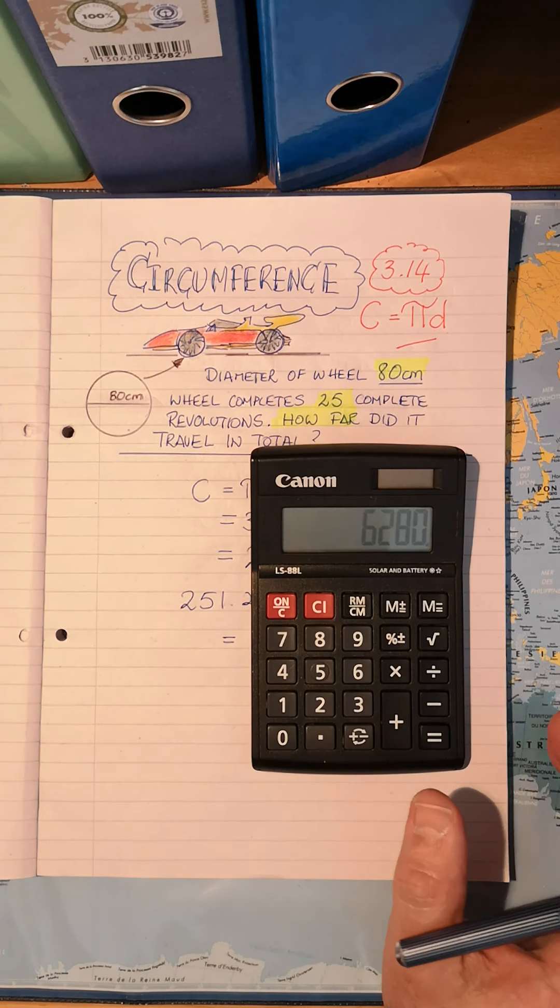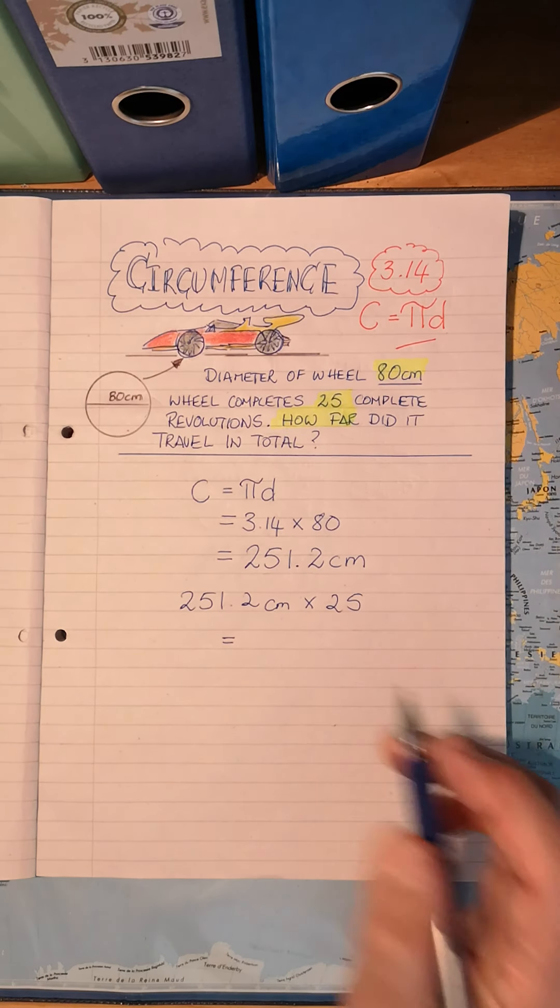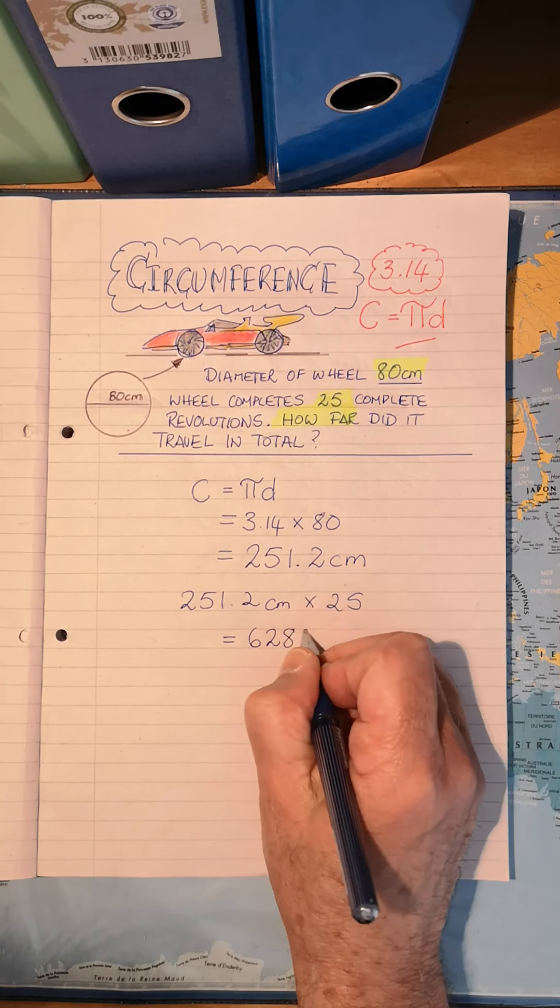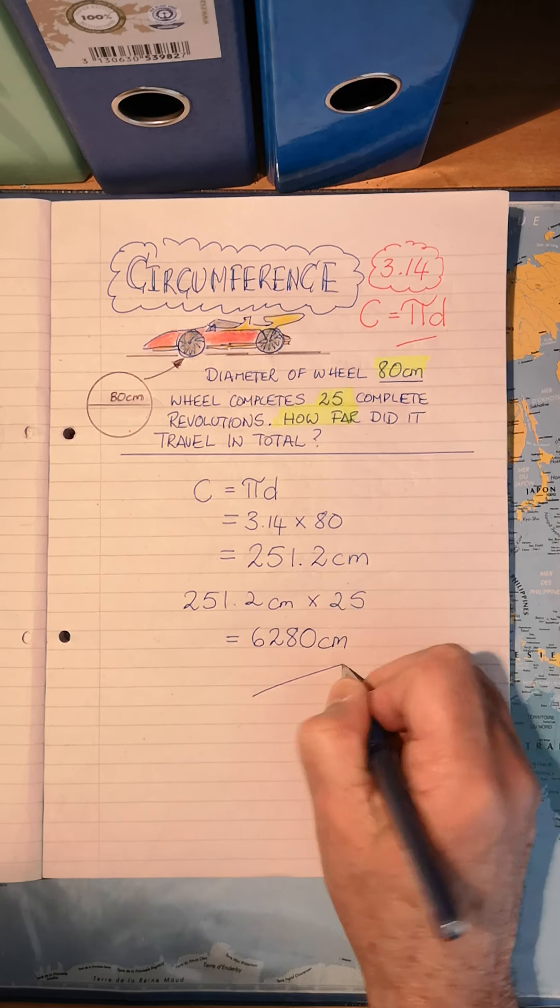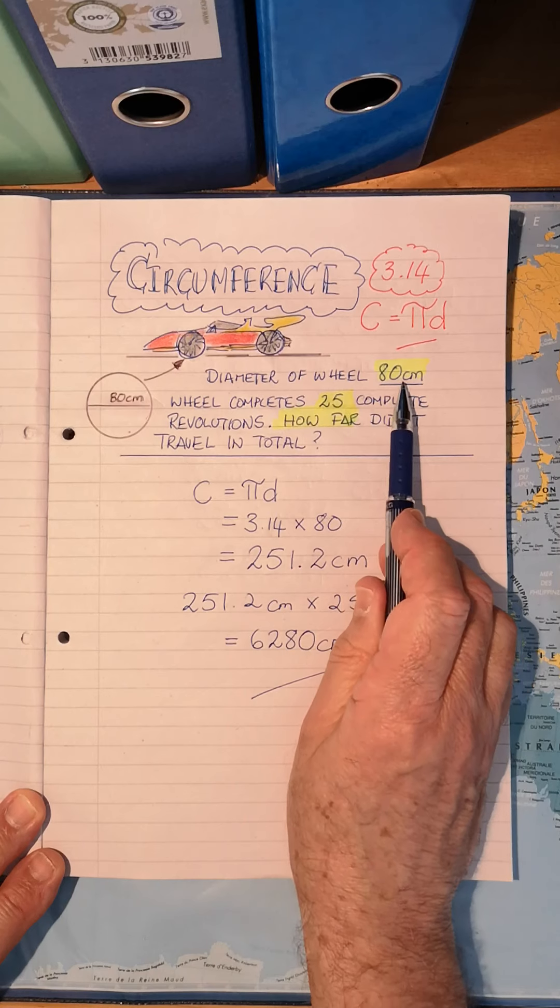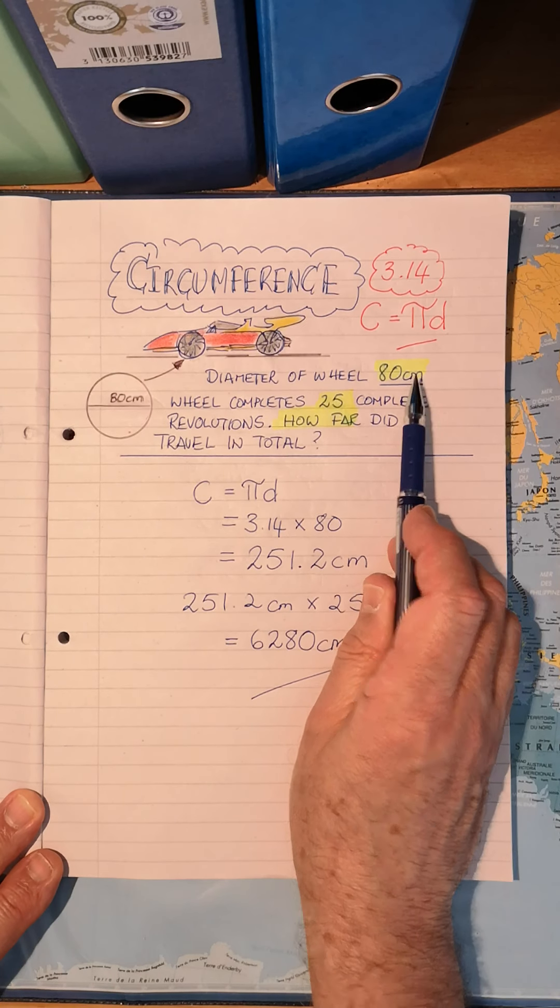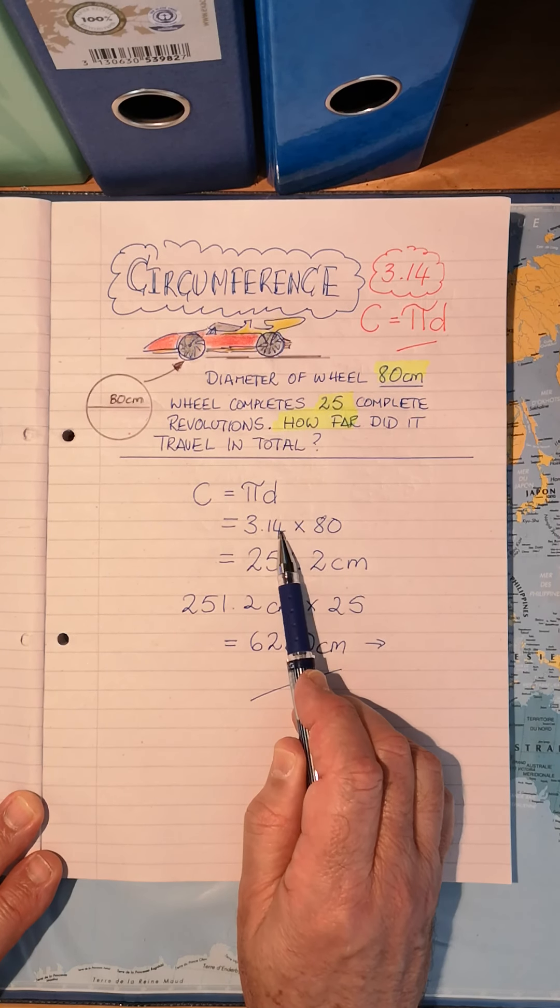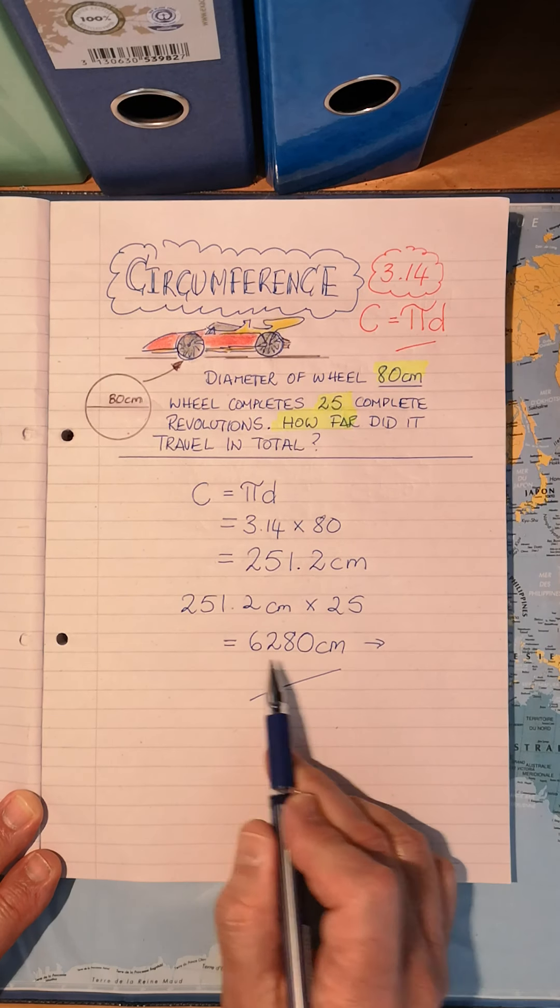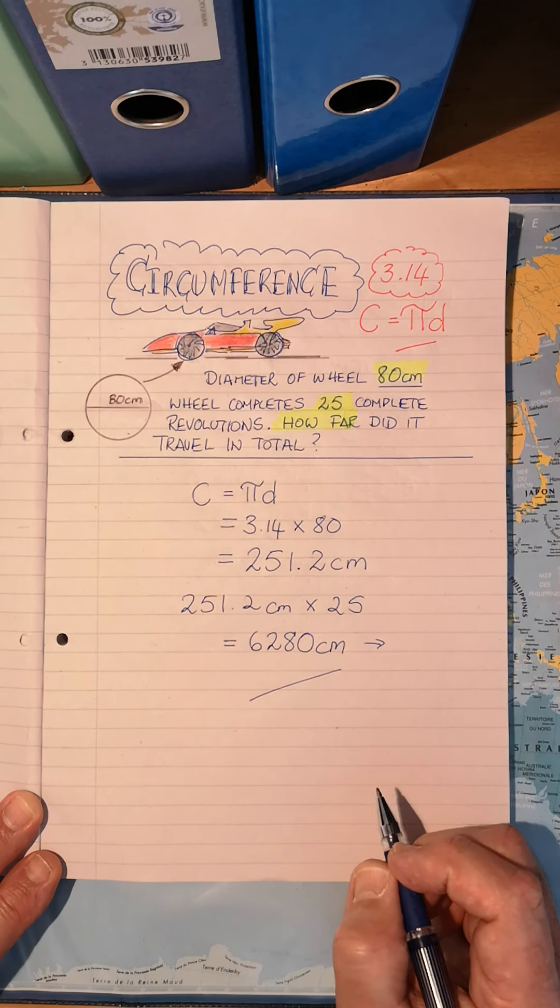So the diameter of the wheel was 80. We first had to times it by 3.14, and then by the 25 complete revolutions before we reached our final answer.